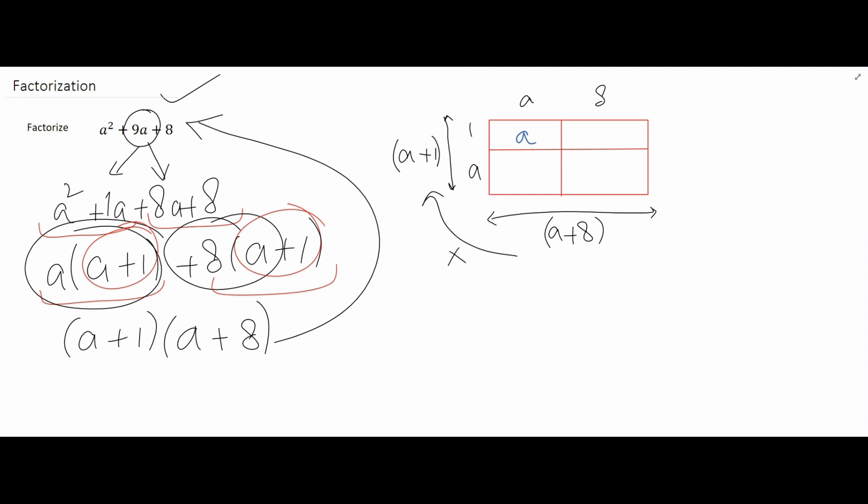For the second rectangle on the right side whose height is 1 and base is 8, the area is going to be 8. For the third rectangle whose height and base both are a, the area of that particular square will be a squared, and the area of the last rectangle will be 8a.